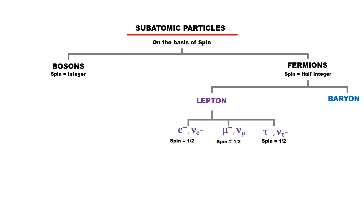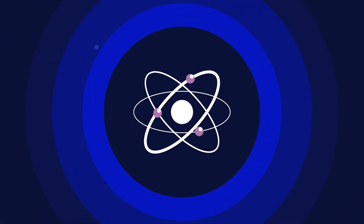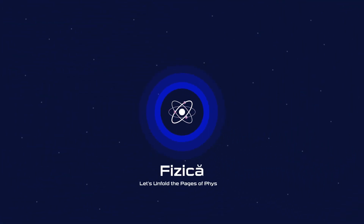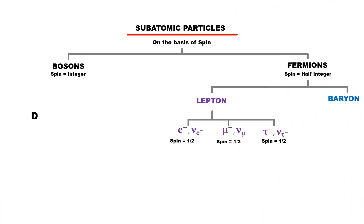In the previous lecture, we discussed about leptons. In this lecture, we will discuss about baryons. According to the classification of subatomic particles, we know that the fermions that interact with the strong nuclear force are called baryons.